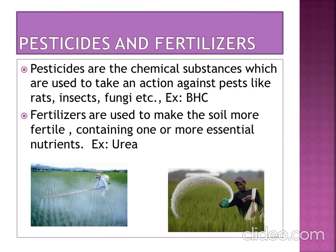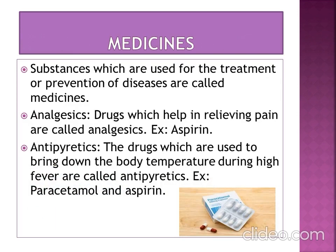Pesticides and Fertilizers: Pesticides are chemical substances which are used to take action against pests like rats, insects, fungi, etc. — for example, DDT. Fertilizers are used to make the soil more fertile, containing one or more essential nutrients — for example, urea.